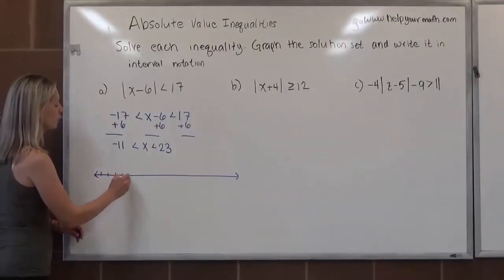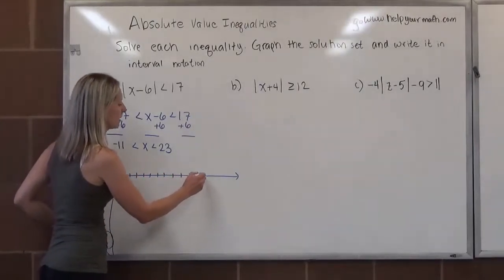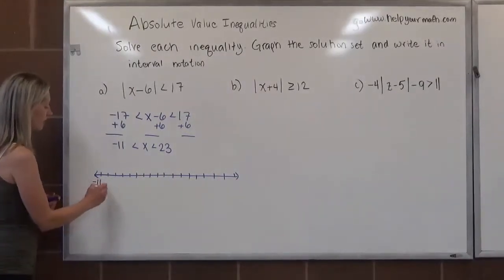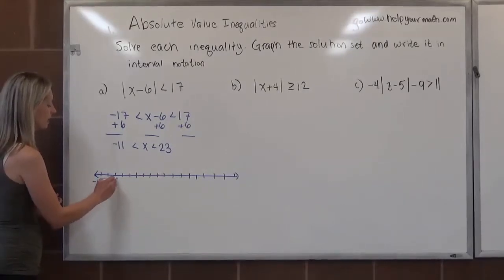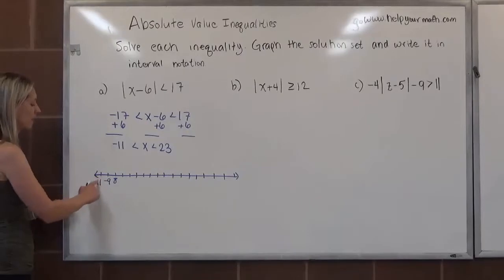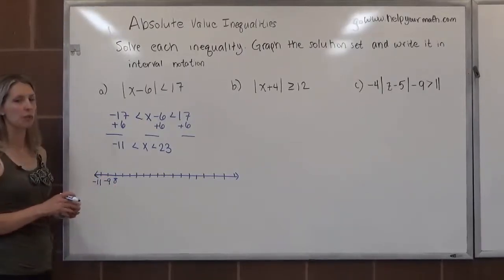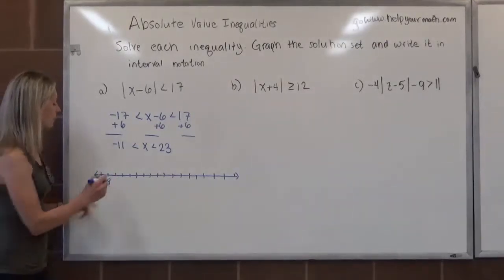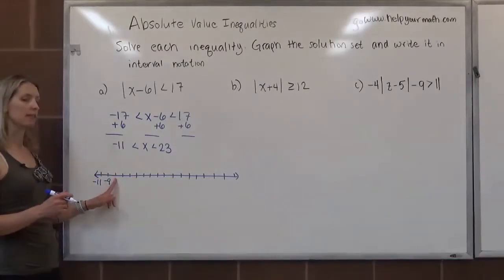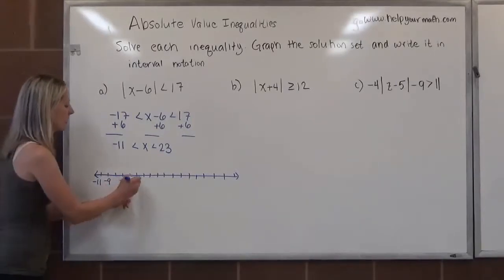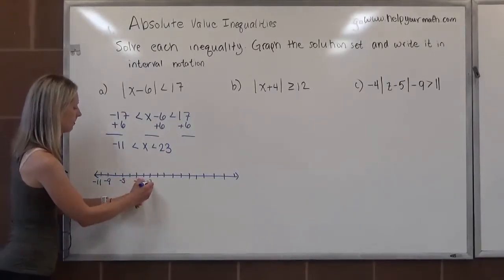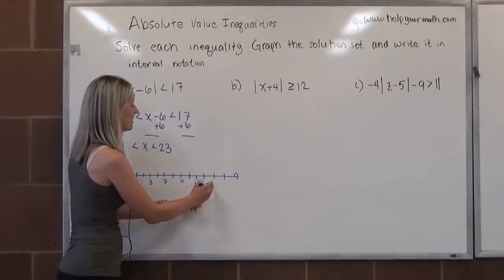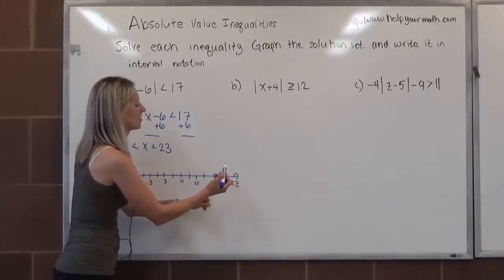But what I can do is I can count by 2s, but not write every single tick mark, because that's going to take a lot of time. We just need to be careful. It has to be consistent. So if there's a distance of 2 here, there should be a distance of 2 here. We want to make sure we're really careful with that on our number lines. But I can write negative 11, negative 9, skip negative 7, skip negative 3, skip 1, skip 5, skip 9, skip 13, skip 17. Just squeezed it in.